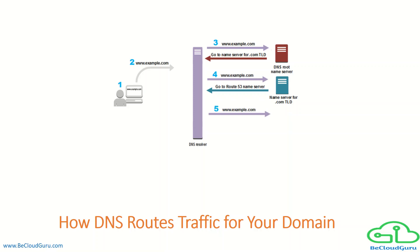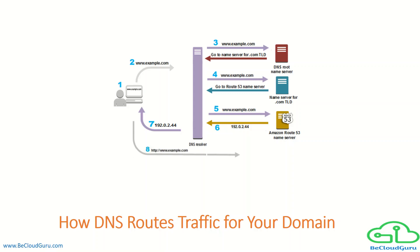The DNS resolver chooses a Route 53 name server and forwards the request for www.example.com to that name server. The Route 53 name server looks in the example.com hosted zone for the www.example.com record and gets the associated value — such as the IP address 192.0.2.44 — and returns that IP address to the DNS resolver. The DNS resolver now has the IP address the user needs, and also caches it for a specified amount of time so it can respond more quickly next time. The web browser then sends a request to that IP address.